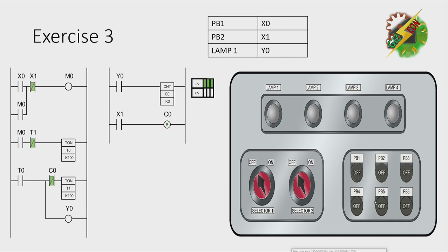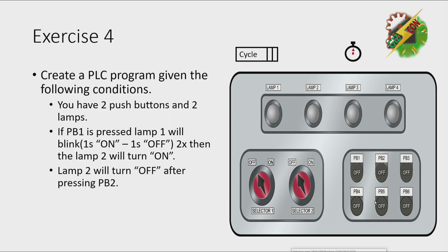Now let's go to exercise 4. Create a PLC program given the following conditions. You have two push buttons and two lamps. If PB1 is pressed, lamp 1 will blink two times. Then lamp 2 will turn on. Lamp 2 will turn off after pressing PB2.